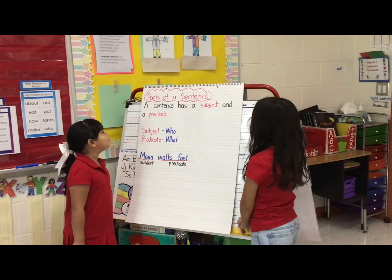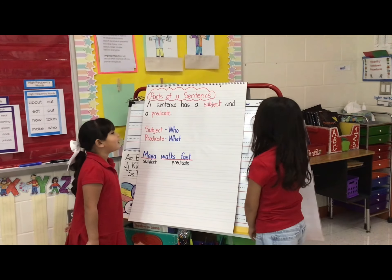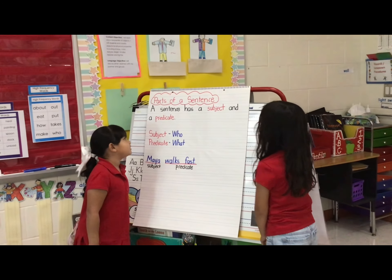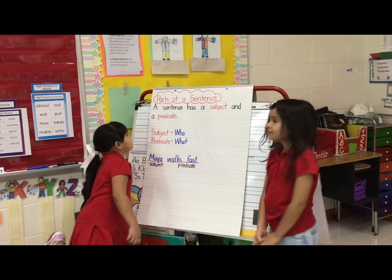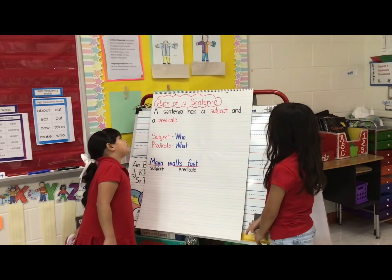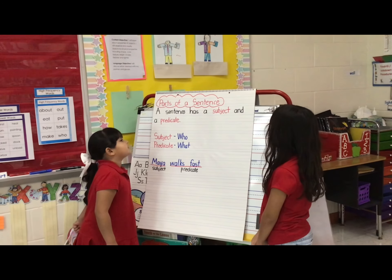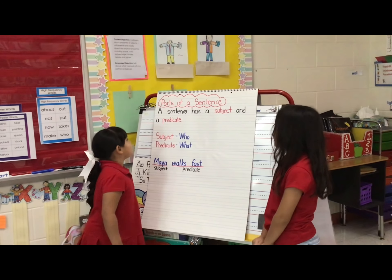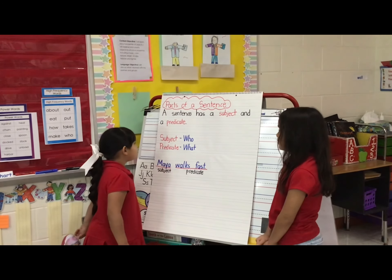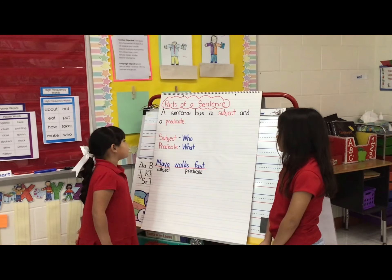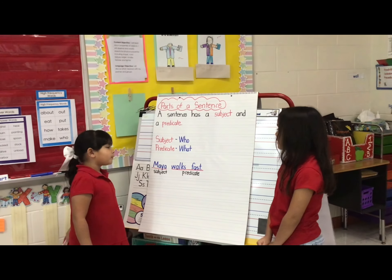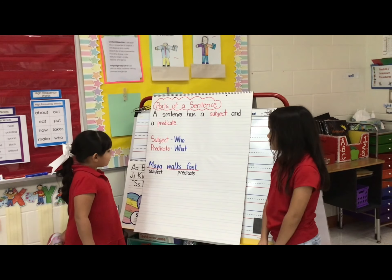We have been learning about parts of a sentence. A sentence has a subject and a predicate. A subject is a who, and a predicate is a what.